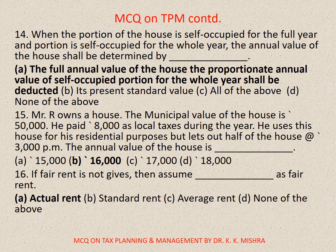Question number 15: Mr. R owns a house. Municipal value: 50,000. He paid 8,000 as local taxes during the year. He uses this house for residential purposes but lets out half of the house at 3,000 per month. The annual value of the house is — A. 15,000, B. 16,000, C. 17,000, D. 18,000. Correct option is B: 16,000.